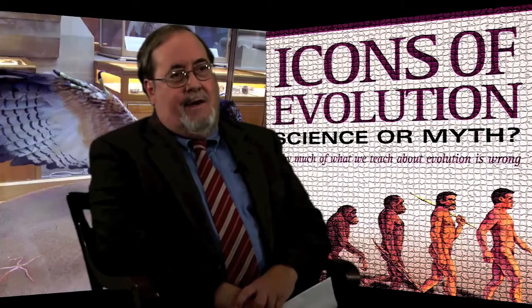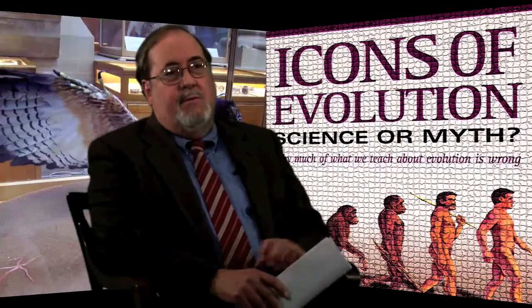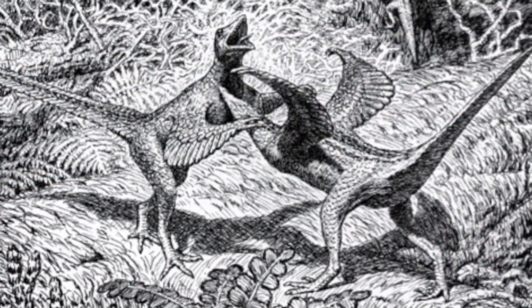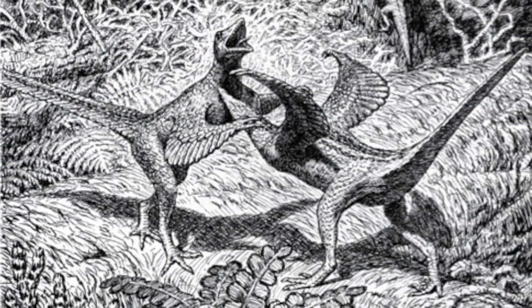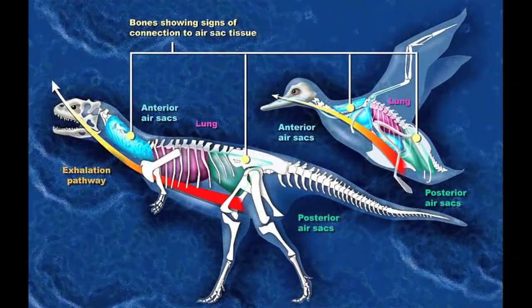We now know that Archaeopteryx has features that it would have to entirely lose to become the ancestor of the modern bird. It was a side branch in the tree, if indeed there was a tree, between ancient creatures and modern birds.